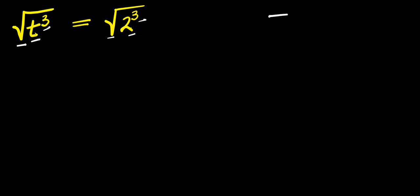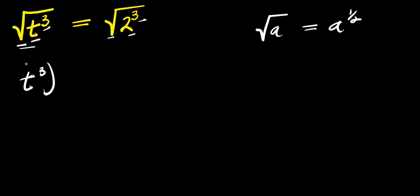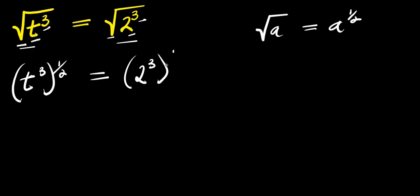Now, if you have square root of a, it is just like writing a to the power of one over two. So square root of t to the power of three is just like writing t to the power of three, raised to the power of one over two. And this equals — we do the same thing here — two to the power of three raised to the power of one over two.